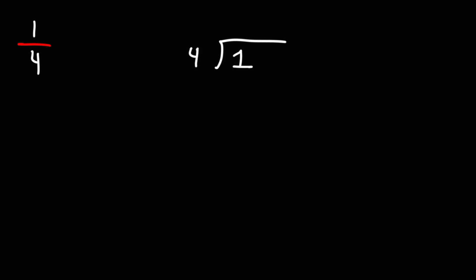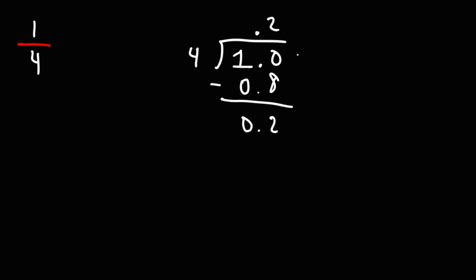Now 4 doesn't go into 1, so we need to add a decimal point and a 0. How many times does 4 go into 10? 4 goes into 10 2 times. 4 times 2 is 8, so 4 times 0.2 is 0.8. 1.0 minus 0.8 is 0.2. Now 4 doesn't go into 2, so we've got to bring down a 0.